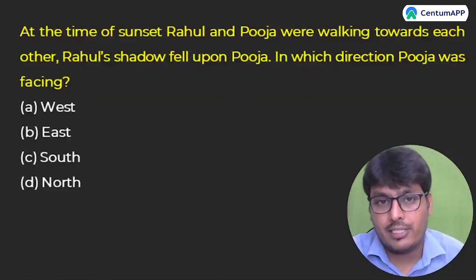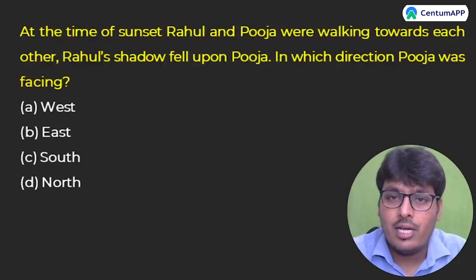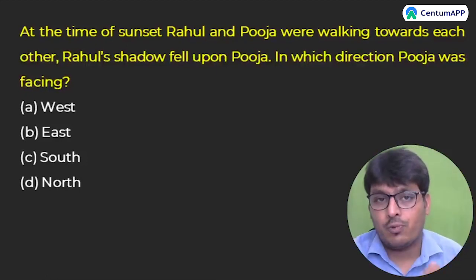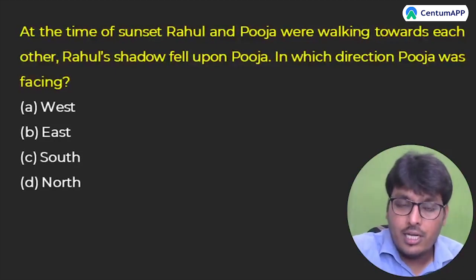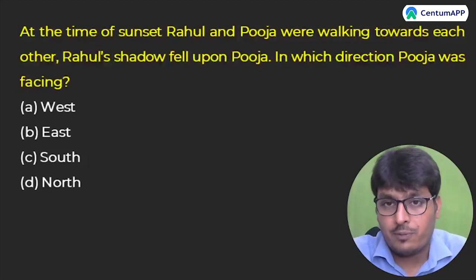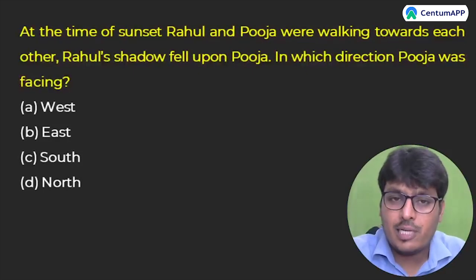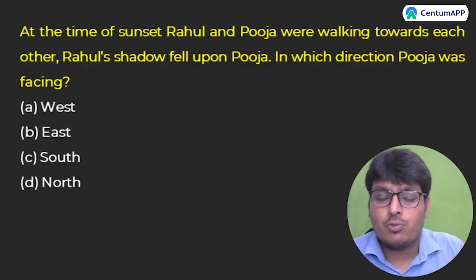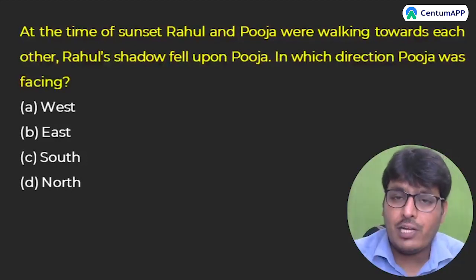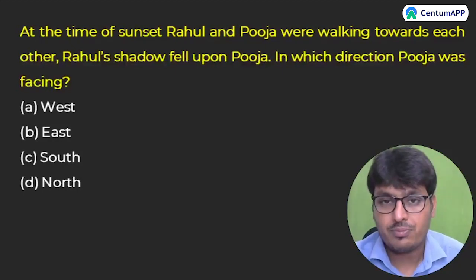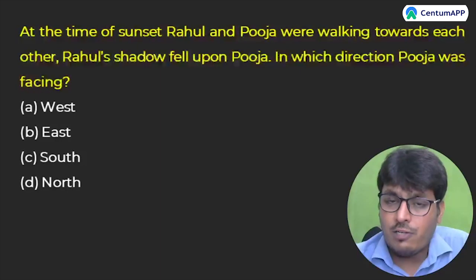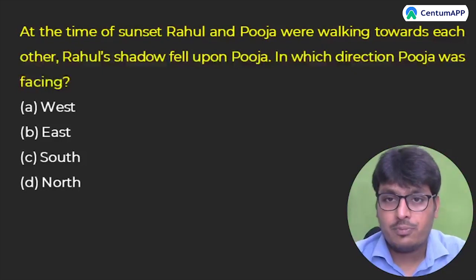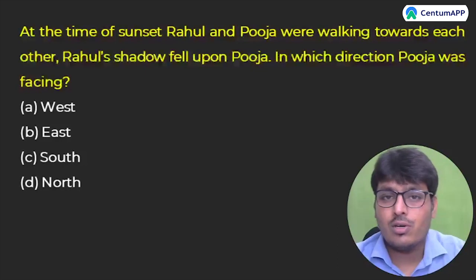We will then move to Type 3 category, which is simple rotation at a particular angle either in the clockwise or anticlockwise direction. In this question, at the time of sunset Rahul and Puja were walking towards each other. Rahul's shadow fell upon Puja. When one person's shadow falls to the left or right, the answer is either north or south. But when one person's shadow fell upon another, the answer will be either east or west.